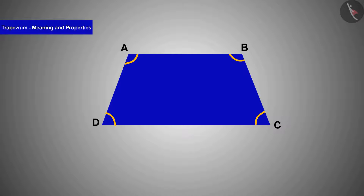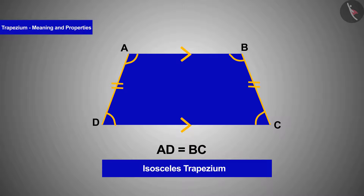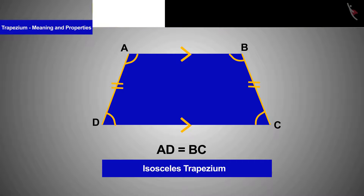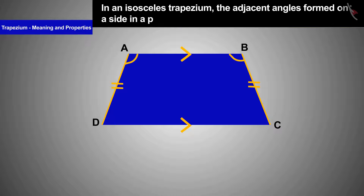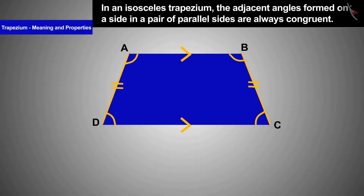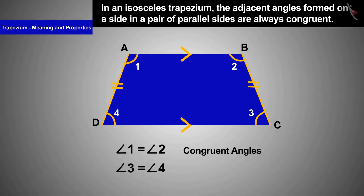A special kind of trapezium: if the non-parallel sides are of equal length, it is called an isosceles trapezium. A major feature of an isosceles trapezium is that the adjacent angles formed on a side in pairs of parallel sides are always congruent.